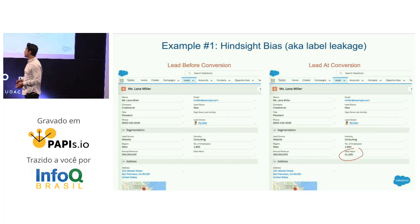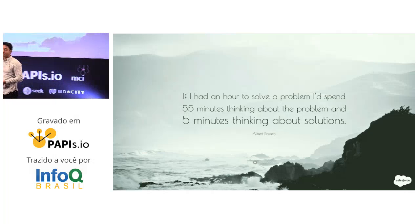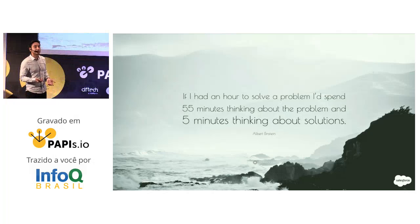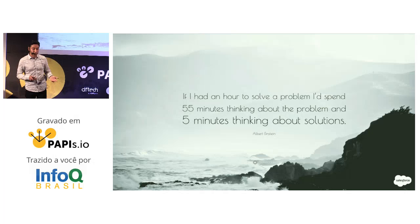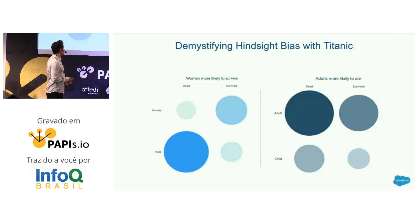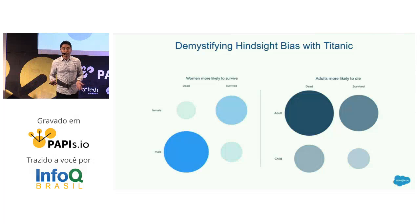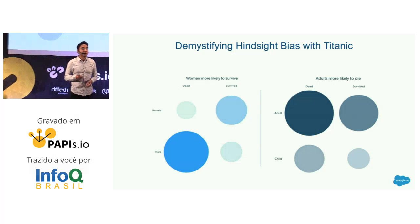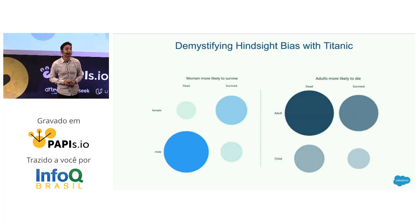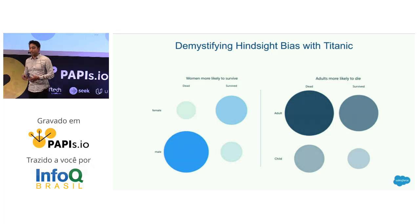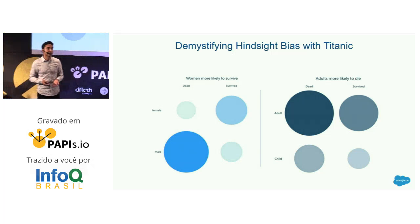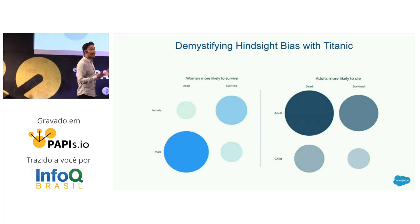Since I'm from Salesforce Einstein, it's apt that I use an Einstein quote. Albert Einstein said that if he had an hour to solve a problem, he would spend 55 minutes understanding the problem and five minutes thinking about the solution. So I'd like to demystify hindsight bias using the well-known Titanic example. We're trying to predict if passengers in the Titanic will survive the shipwreck, and the idea is that features like gender, age, and cabin class have patterns predictive of survival.